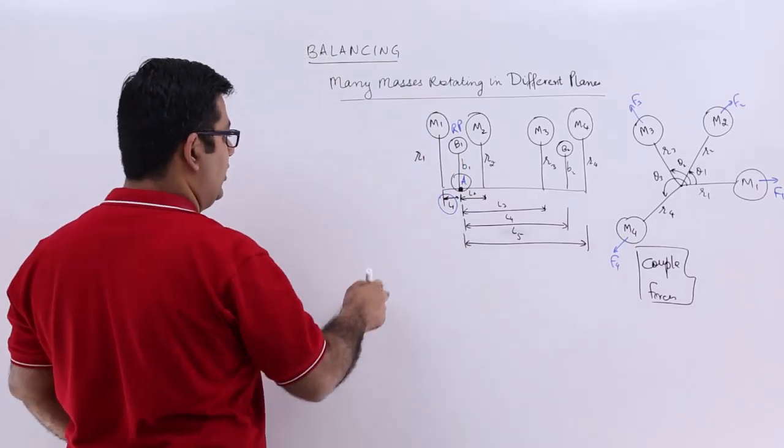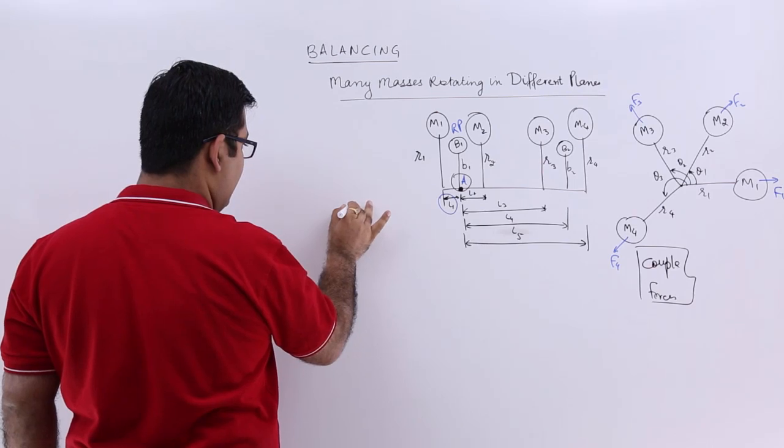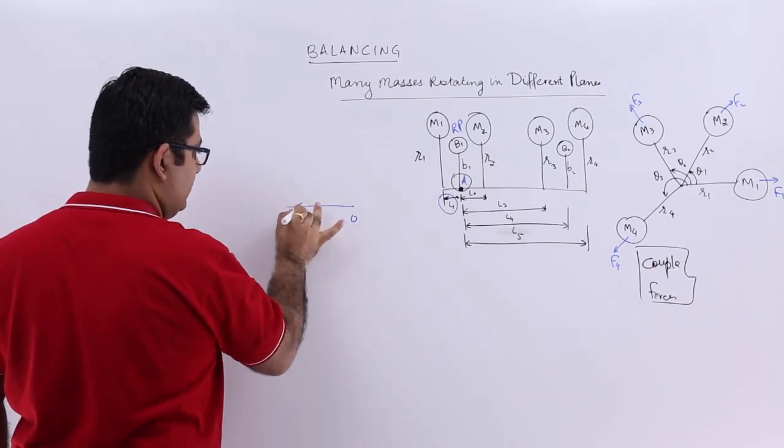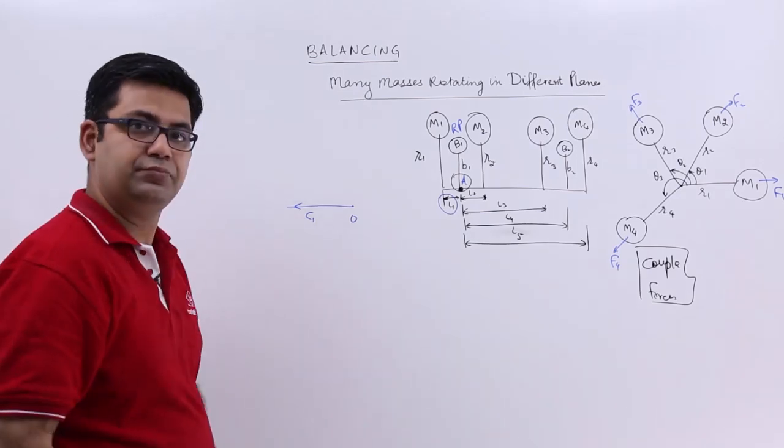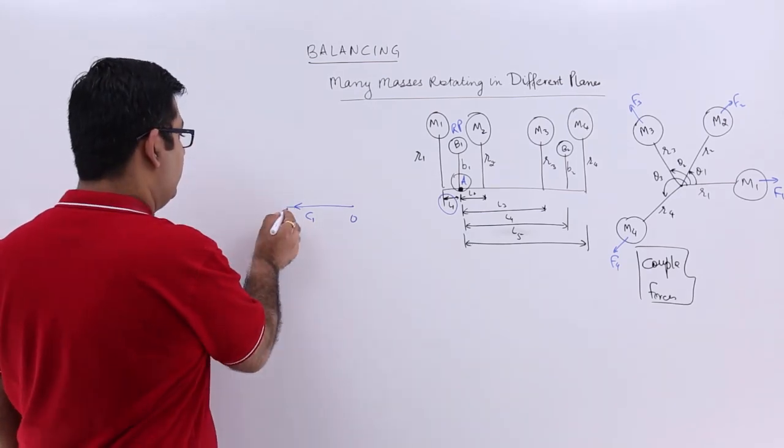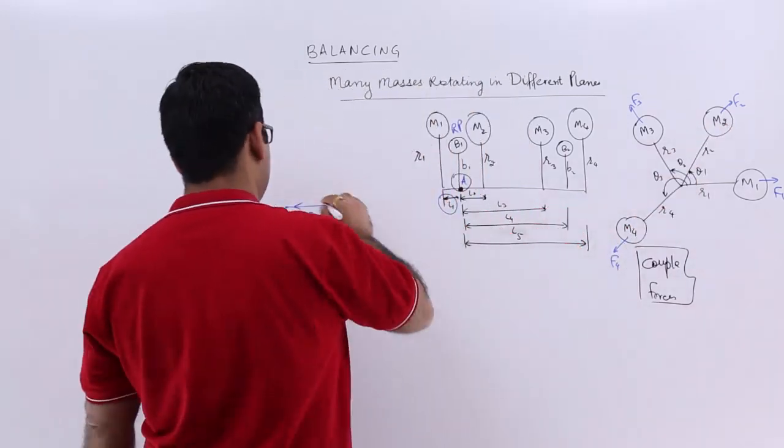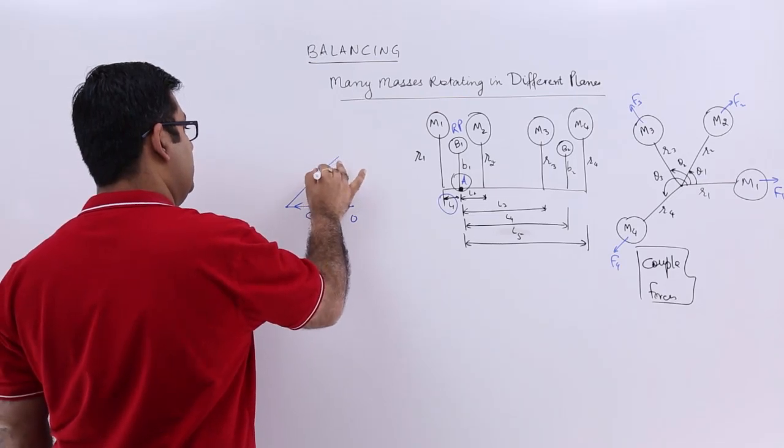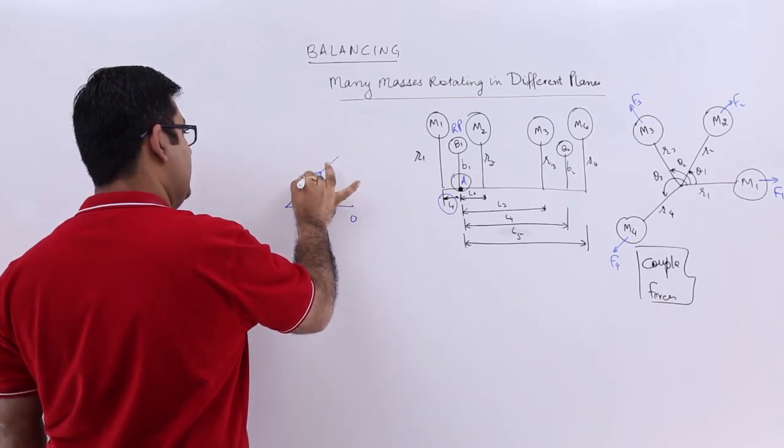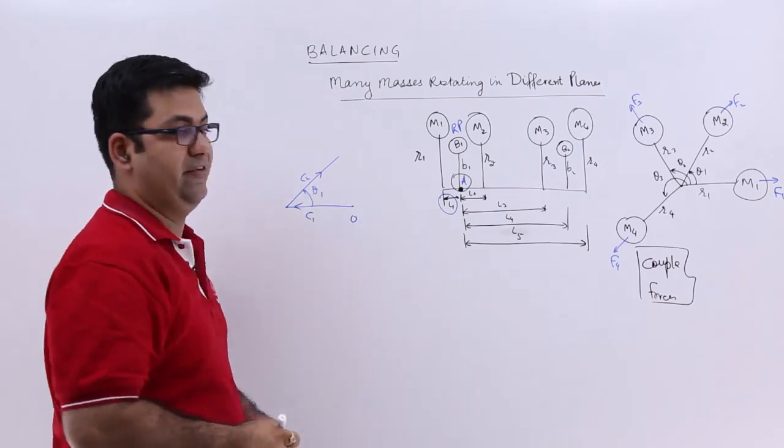So we will give it a reference point O and I will draw a line like this which will give me let us say C1. Now from this point, I will draw a couple in direction of C2. So you will have this. So this is C2.